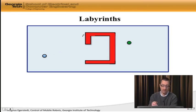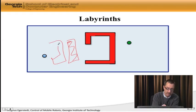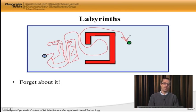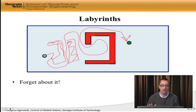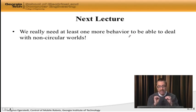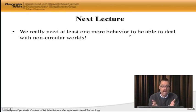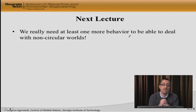What if you have a labyrinth? You have a bunch of different obstacles and the robot needs to figure out the right path through them. It ain't going to happen with just two behaviors — there's clearly no way of dealing with that with only avoid-obstacle and go-to-goal. What we need is at least one more behavior that allows us to deal with worlds that aren't just circular or point obstacles — worlds that are convex, non-convex, or even labyrinths. We want our robotic rat to get the cheese, and that is going to be the topic of the next lecture.